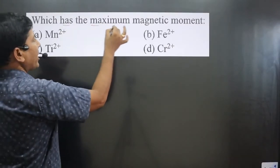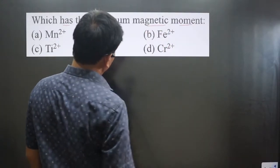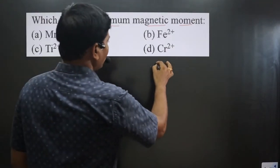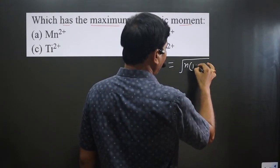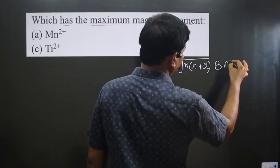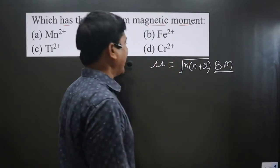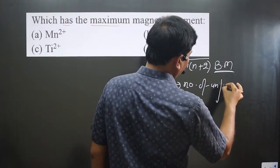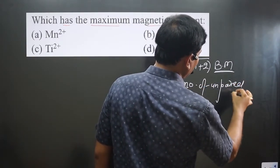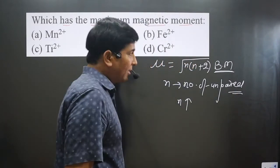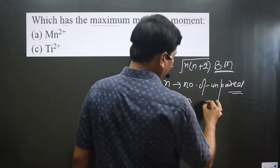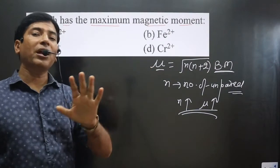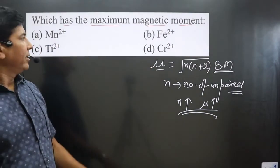The question asks which species has the maximum magnetic moment. The formula to calculate magnetic moment is μ = √(n(n+2)) Bohr magnetons, where n is the number of unpaired electrons. Always keep in mind that as the n value increases, the magnetic moment value also increases.